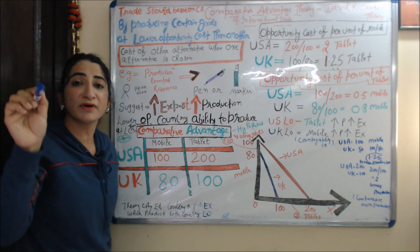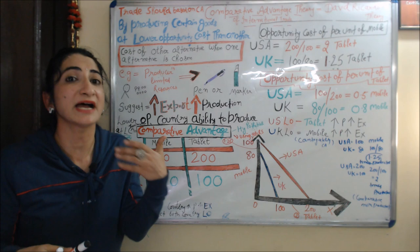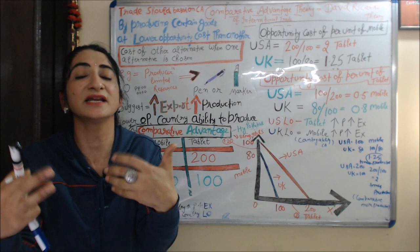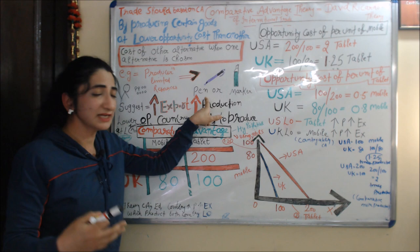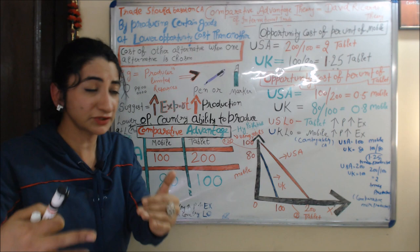For example, a producer has limited resources. With these limited resources, either he can produce a pen or a marker. Suppose the producer decides to produce a pen and give up the marker — the opportunity cost of producing the pen is the sacrifice of the marker. Because opportunity cost is the cost of the other alternative when one alternative is chosen.